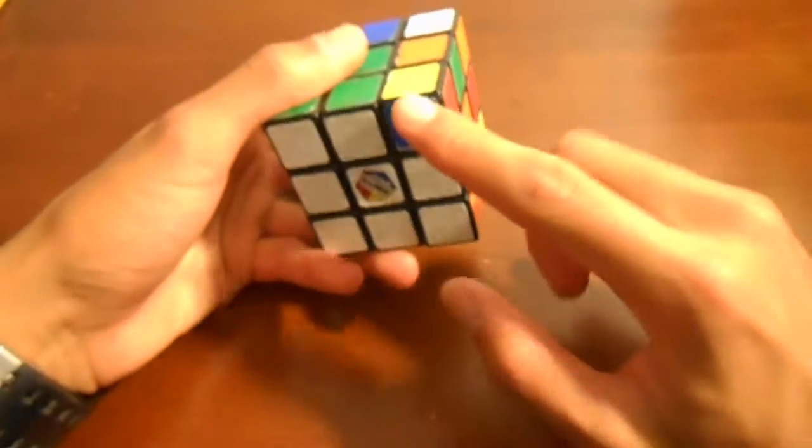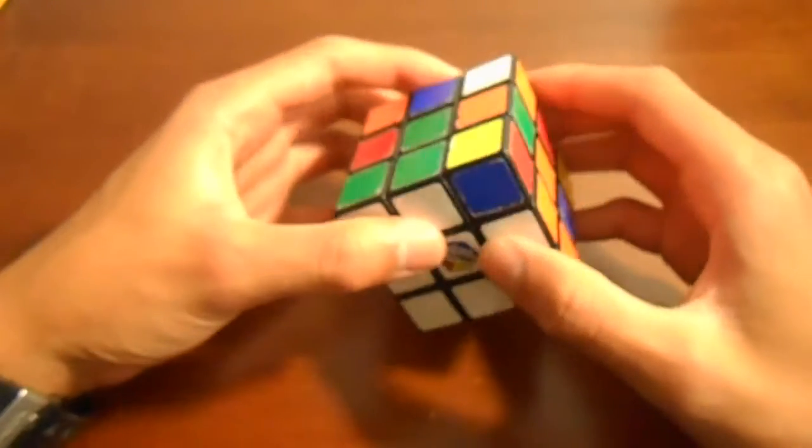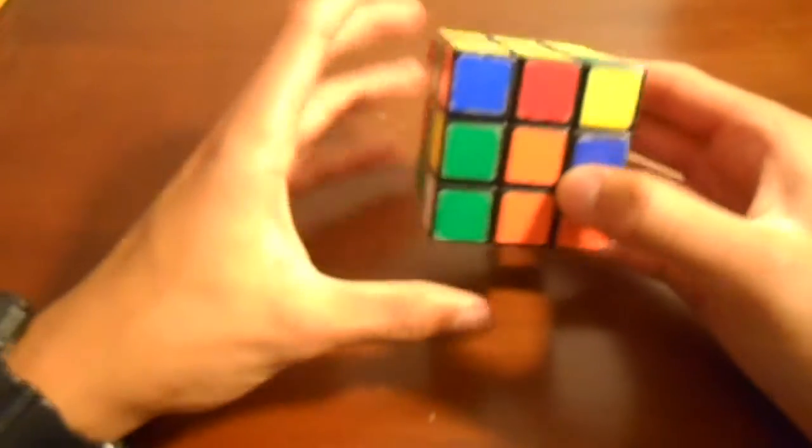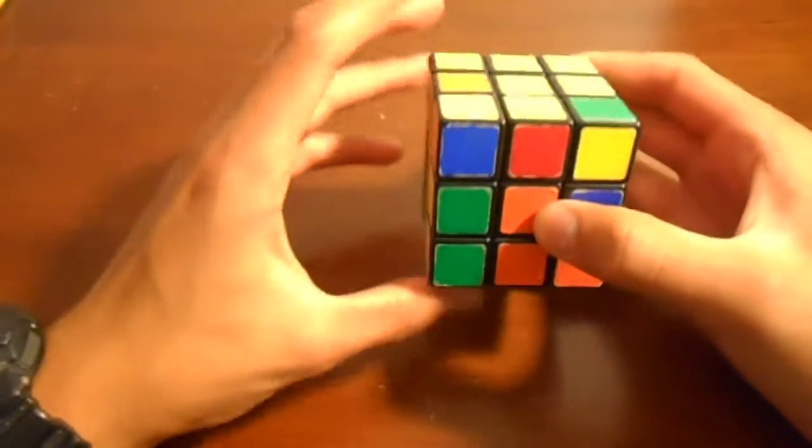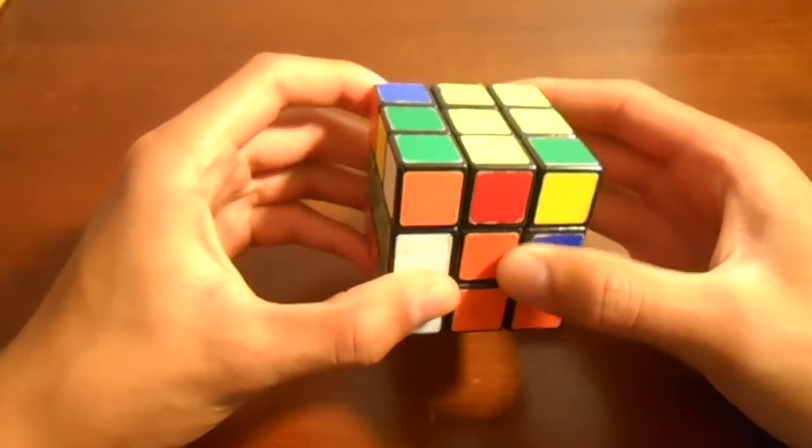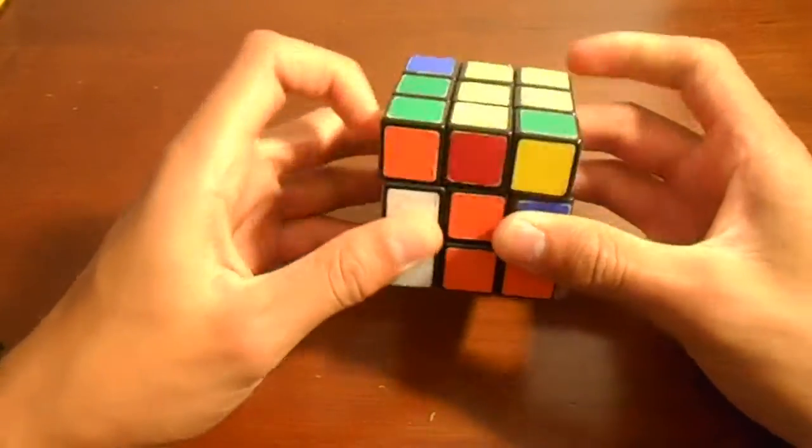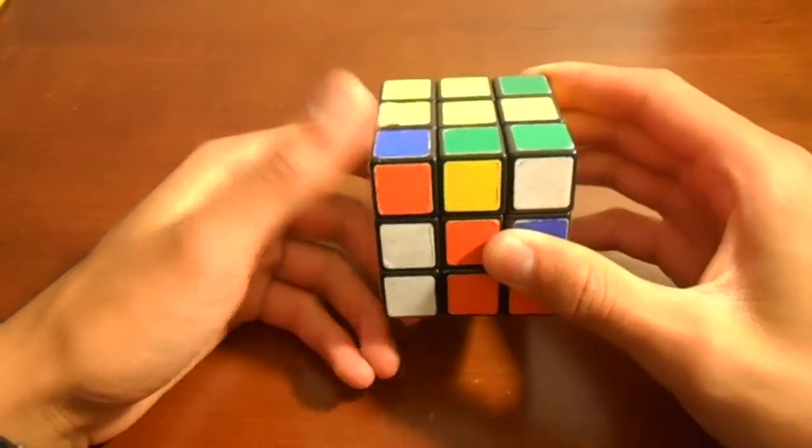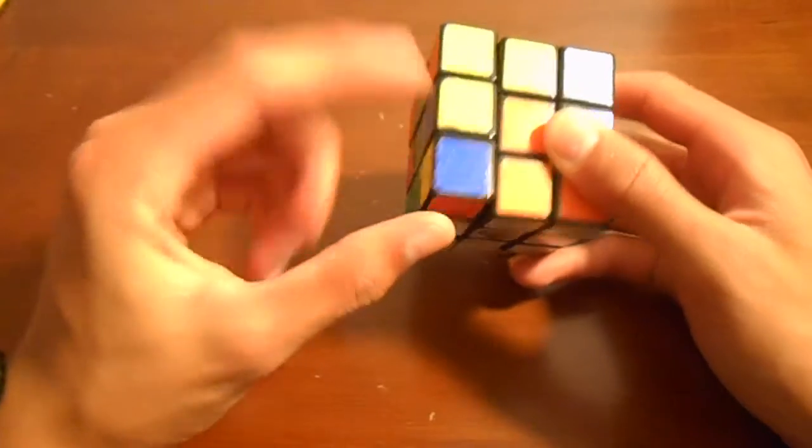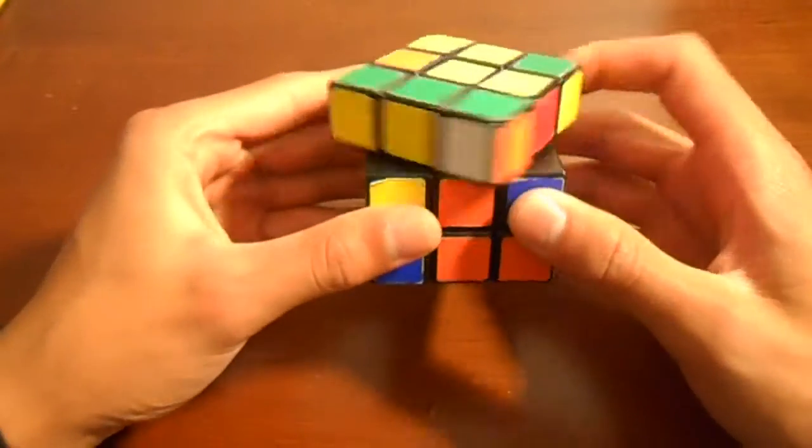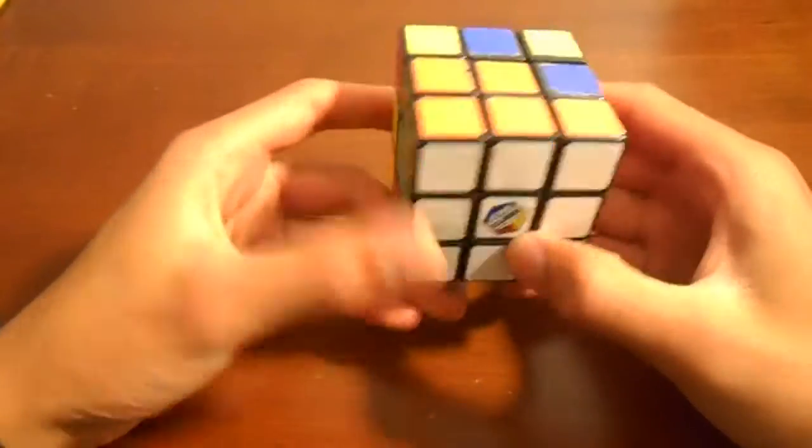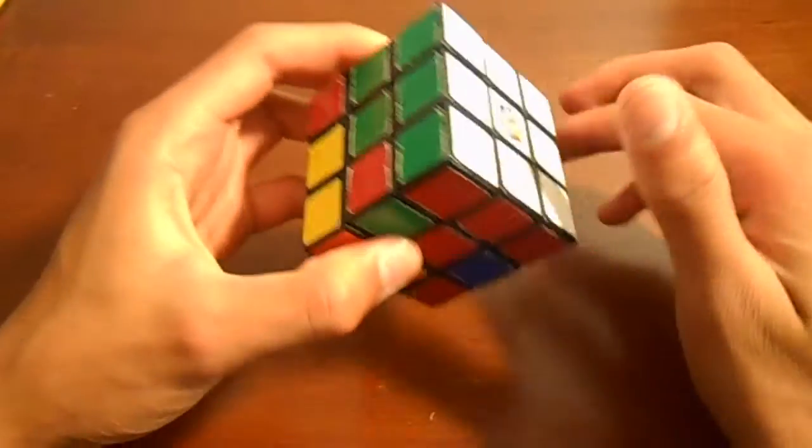How that would look with the slot approach is bringing it up, and you can put it here or here, it doesn't matter. Then just bring it down. You just want to get it out of that slot, doesn't matter which way, and then you can insert it. That is how you solve the corners to the first layer.